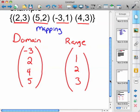Okay, so domains are listed. That's all the first numbers in your ordered pair. You got negative three, two, four, and five. And then your range, one, two, and three. So let's map the first one.